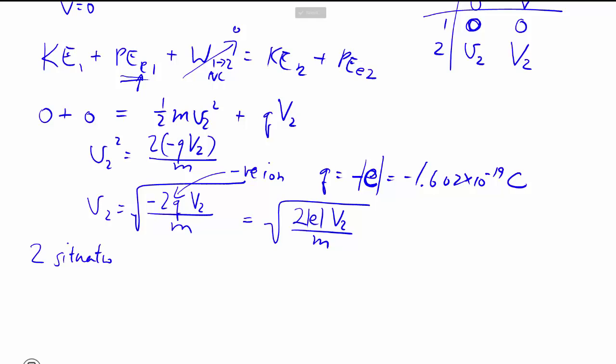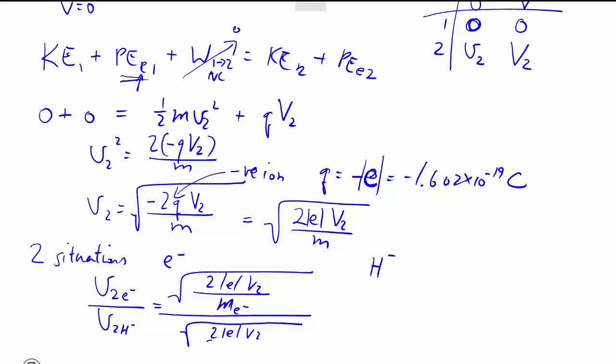Now, we have two different situations. We have the e minus case, and we have the negative hydrogen ion case. The only difference is the masses are different. And they want the ratio between these two things. As you imagine, the electron is much, much lighter, and so the velocity should be quite a bit higher. So here, the mass would be the electron's mass. And on the bottom, it will be the hydrogen's mass.